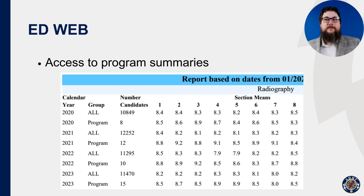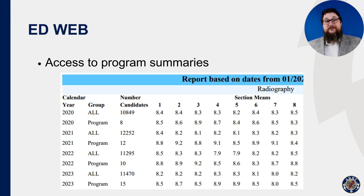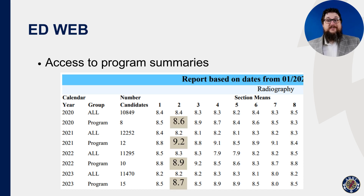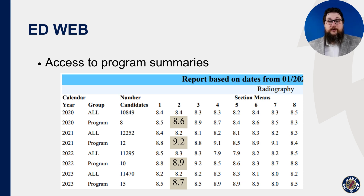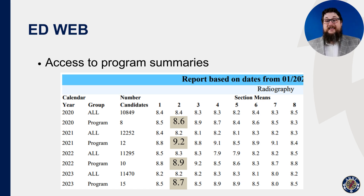Program directors can view their program's average scores for each calendar year, as well as the national average through EDWEB. Remember, program sizes are small and students will differ from cohort to cohort — don't freak out over a single year's worth of data. Scores can vary widely; see the example on screen, ranging from an 8.6 to a 9.2 just in four years. Instead, look for trends — for example, is there a section where your program is consistently high or low compared to the national average?